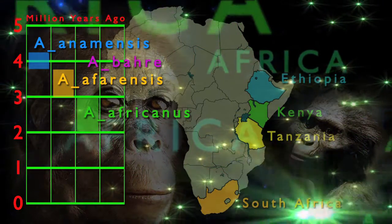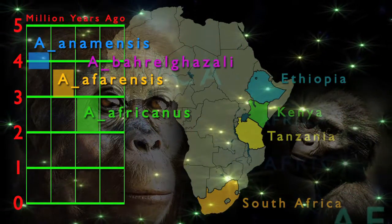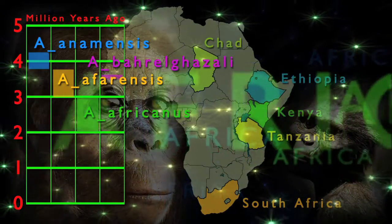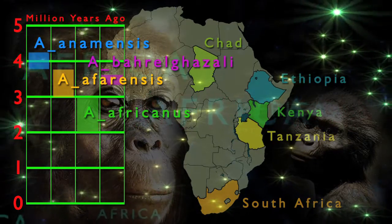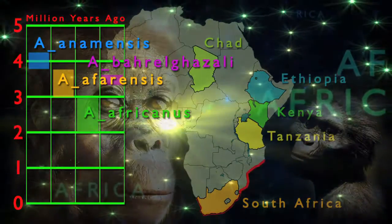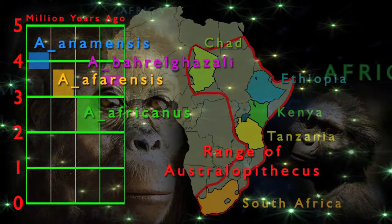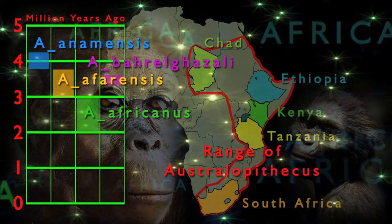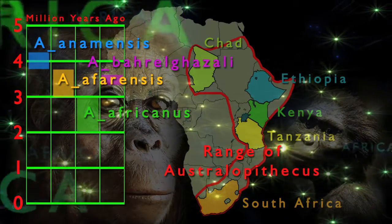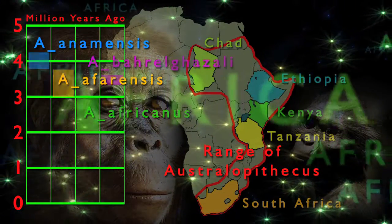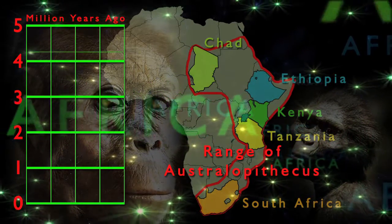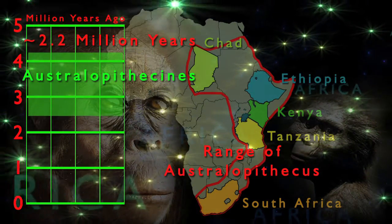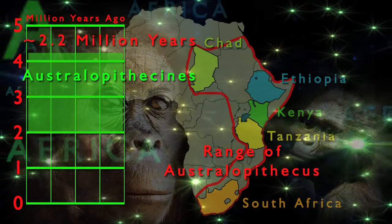Let's also mention Australopithecus bahrelghazali. The fossil find consists of a jaw fragment and about seven teeth, discovered in 1993 by Michel Brunet near Koro Toro in Chad, dating to about 3.6 million years ago. Notably, it is located about 2,500 kilometers west of the Great Rift Valley, expanding the range of Australopithecus well into Central Africa. Some paleoanthropologists believe it is more rightly assigned to afarensis, as it falls within the same time range and variation parameters. Altogether, Australopithecus lived over a span of about 2.2 million years, ranging across Eastern and possibly North-Central Africa, from about 4.2 to around 2 million years ago.